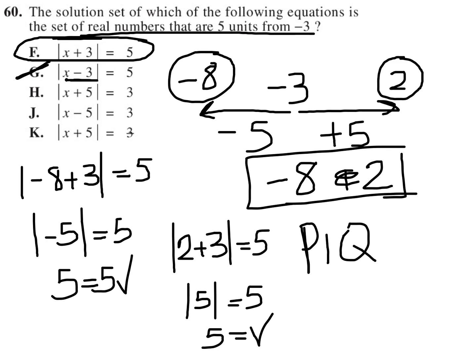And answer choice H, by plugging in negative eight, we'd get negative three. Absolute value of negative three is positive three, so that works. However, when we plug in two, two plus five is seven, not three, so that does not work.